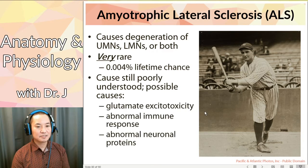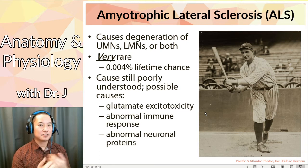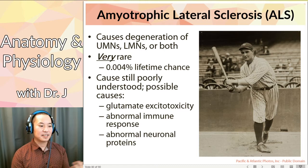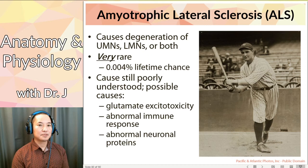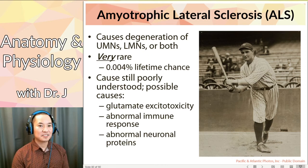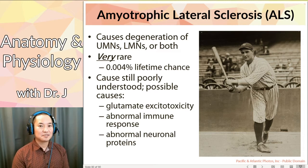There are many theories - things like glutamate excitotoxicity, meaning maybe you're getting too much of that stimulatory glutamate signal. Or sometimes with an abnormal immune response, maybe the immune system is attacking the upper or lower motor neurons. Or sometimes abnormal proteins in a neuron can cause them to die or malfunction. So they still don't know what causes ALS.